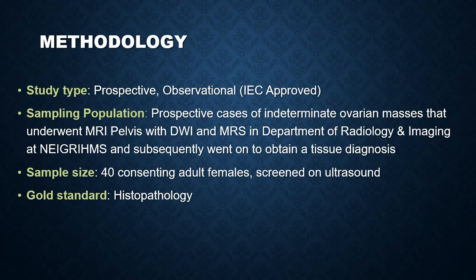Coming to the methodology: our study type was a prospective observational study, approved by the Institutional Ethics Committee of NEIGRIHMS. The sampling population was prospective cases of indeterminate ovarian masses screened on ultrasound who then underwent MRI pelvis with diffusion-weighted imaging, MRS, and contrast enhancement in the Department of Radiology and Imaging. Subsequently, those who obtained a tissue diagnosis were taken up for statistical analysis. A final sample size of 40 consenting adult females were screened on ultrasound and subsequently underwent MRI and histopathological confirmation. The gold standard of our study was histopathology.